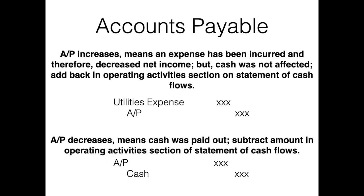Let's look at accounts payable. If accounts payable increases, this means an expense has been incurred like a utility bill, and net income was decreased. But we didn't actually pay for this bill — it increased accounts payable, meaning we owe this money. Therefore, this would have to be added back to net income on the operating activity section. But if accounts payable decreased, that would mean we've paid toward that account payable, so this would have to be taken out of the operating activity section.